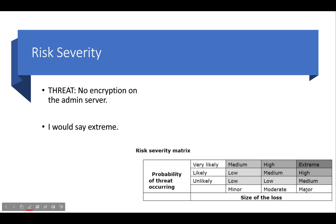To use the table: the probability I said is very likely — highlight that. The size of loss is major — highlight that. The options for probability are very likely, likely, or unlikely; for size of loss you can choose minor, moderate, or major. You can add more options but it's not necessary — stick with the template they give you. From those choices, we work out the risk severity: very likely plus major gives a risk severity of high or extreme.